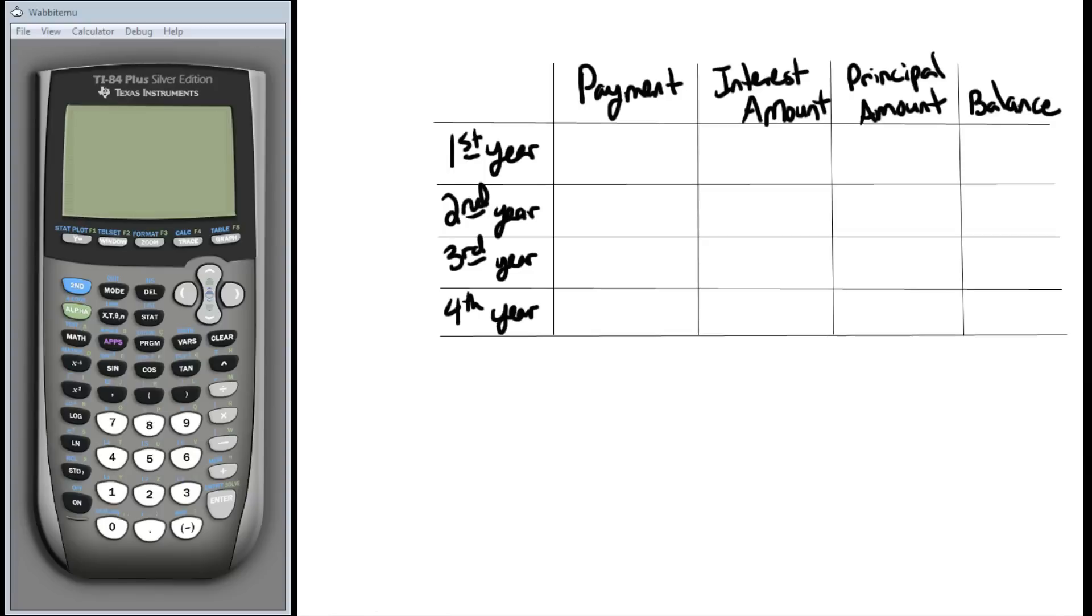First things first, we need to use our TVM solver to find out what that regular payment would be. I'm going to go to my calculator here, apps, finance, TVM. Remember we're going to make four annual payments, so our N would be 4. We had a 5% APR, so 5%. Our starting balance was 20,000. We were in the negative, 20,000. Make sure you use the right negative.